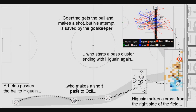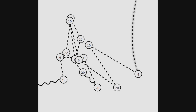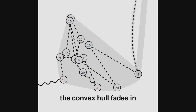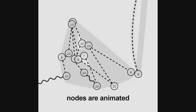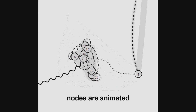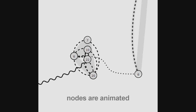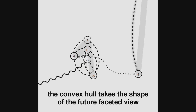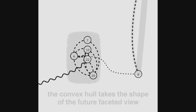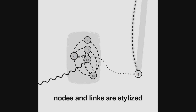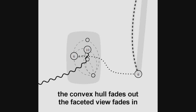The transition from the original node-link diagram to a visualization is achieved in several steps. First, the convex hull surrounding the node fades in. Then, the nodes are animated to their respective position in the future visualization. The links and the convex hull follow the nodes during the animation. The convex hull then takes the shape of the future visualization. Nodes and links are stylized according to the facet to which they belong, and finally, the convex hull fades out while the faceted view fades in.